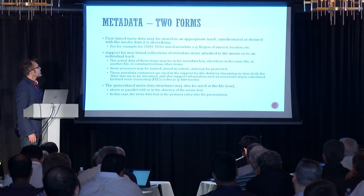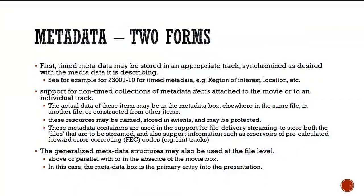There are two forms of metadata. Metadata stored in timed metadata tracks is synchronized with the media — for example, a region of interest in video or location information where content was recorded. There's a full specification, part 10 of the MPEG-B suite, for timed metadata. There is also support for non-timed collections of metadata items attached to the movie, stored in the metadata box, either in the same file or externally referenced. These metadata items can be protected and used for applications like hint tracks for pre-calculation of FEC.